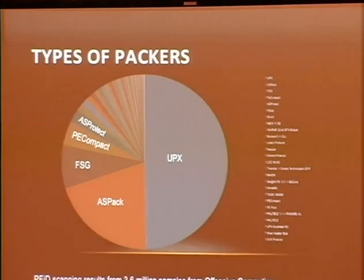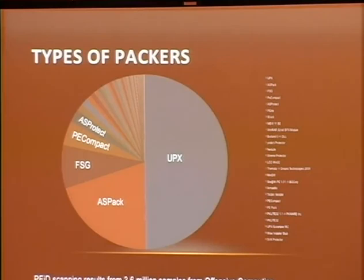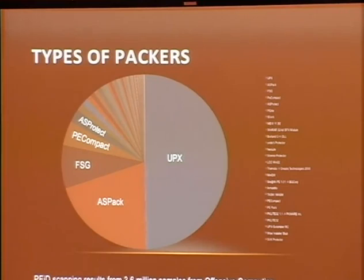I run the website Offensive Computing and based on about 3.6 million samples, of those that are packed, this is typically the breakdown. UPX is the most predominant packer, followed by ASPACK and FSG. Why is UPX roughly 50% of all packed malware? It's free, it's open source and you can modify it. The reason everybody uses it is because it's one of the only ones that actually works.